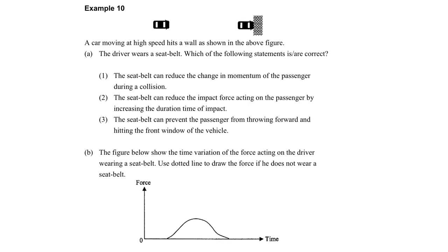A car is moving at a high speed and hits a wall as shown in the figures. There is an initial speed U, and suppose it will stop finally at V equals zero. If it is wearing a seatbelt, which of the following is true?